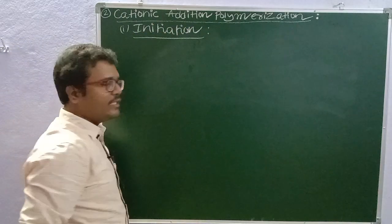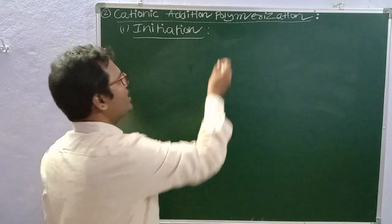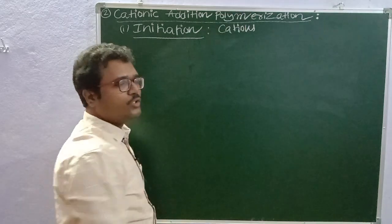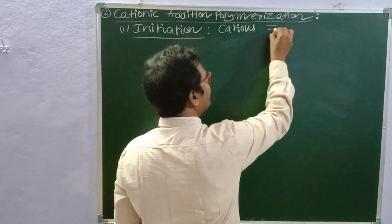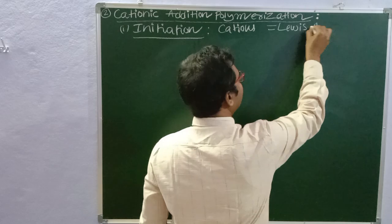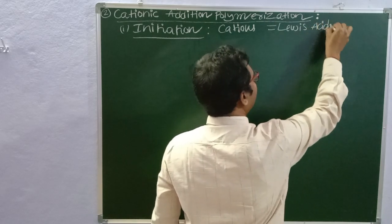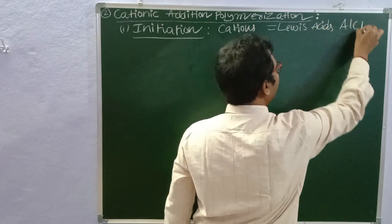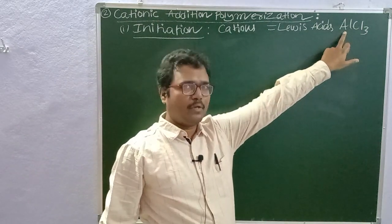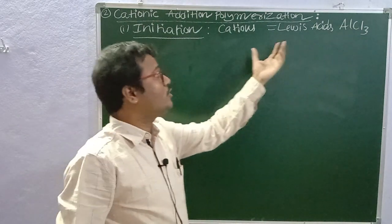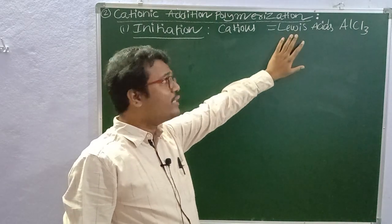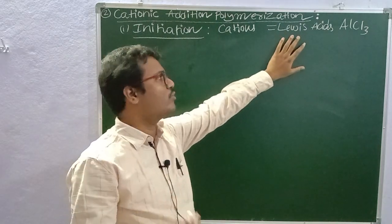To generate cations, we need to use a Lewis acid. For example, AlCl3 — aluminum trichloride — is the chemical we need to use. This chemical is a Lewis acid, and a Lewis acid derives or accepts electrons. AlCl3 is called the initiator.